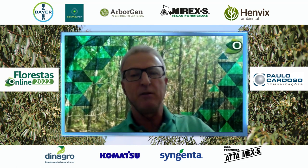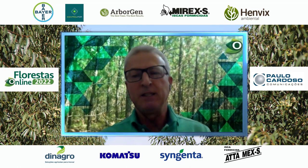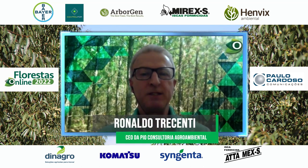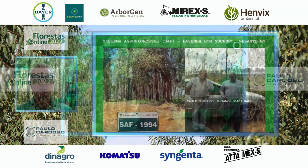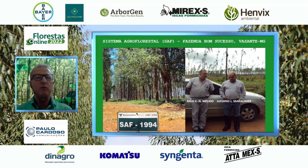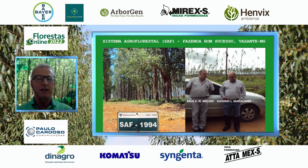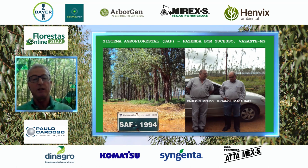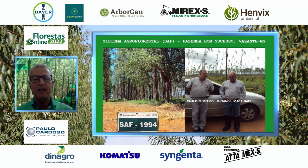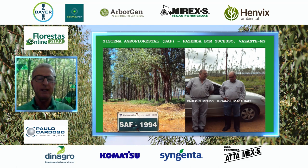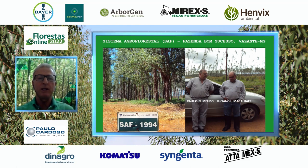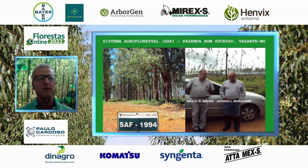Muito bem, Paulo. Vamos lá. Eu vou contextualizar um pouquinho. Não é bem o início da ILPF no Brasil, mas eu considero que aqui no Cerrado, a integração lavoura-pecuária começou para valer com a difusão do trabalho com o pessoal da Votorantim. Aqui eu rendo homenagem aos engenheiros florestais Raul Melido e Luciano Laje Magalhães, que na Fazenda Bom Sucesso, em 1994, começaram esse trabalho. Isso veio culminar no programa ABC — hoje plano ABC — com linha de crédito.